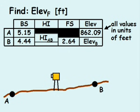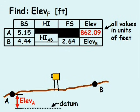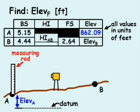From the problem statement, we know the elevation at point A equals 862.09 feet. If we place the measuring rod at point A and take a level reading from the instrument to the rod, the back sight distance for point A is the vertical length from the ground up to the sighted location on the rod.